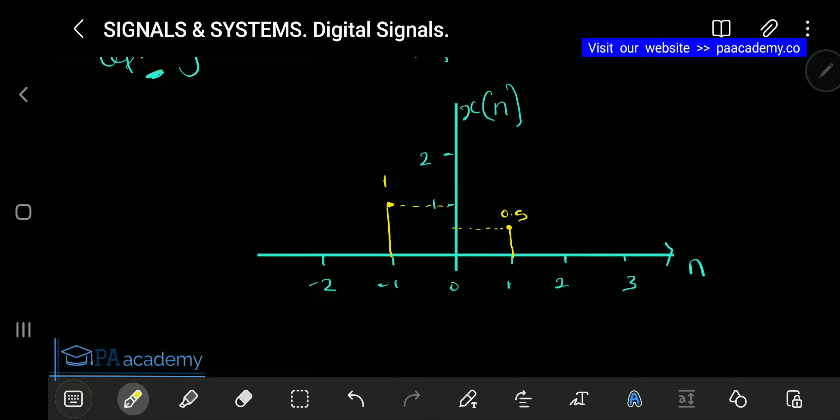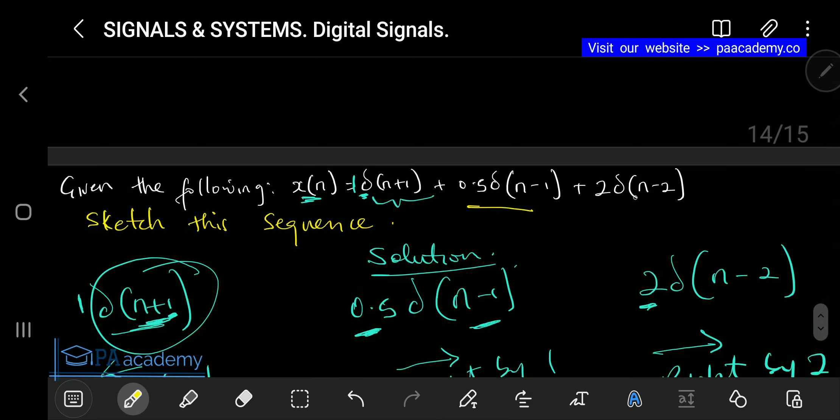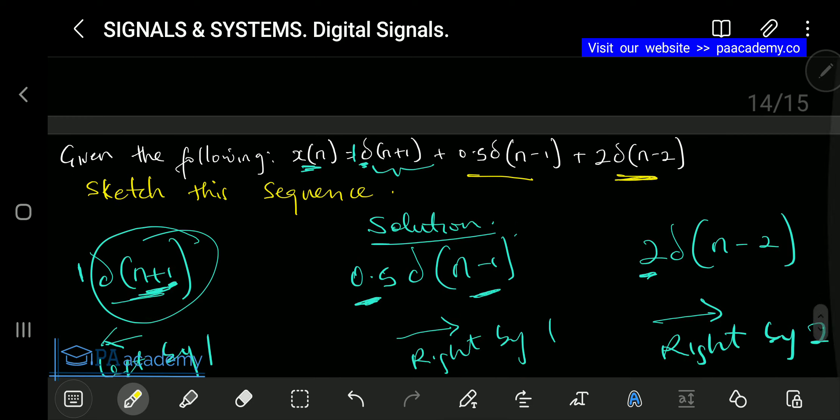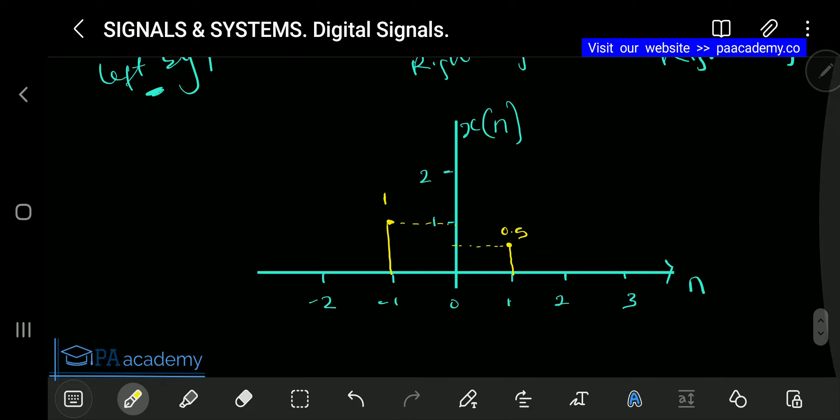The third one is n-2, which is shifted to the right by 2, and the amplitude is 2. So this is 2. You should trace it up, and this is 2.